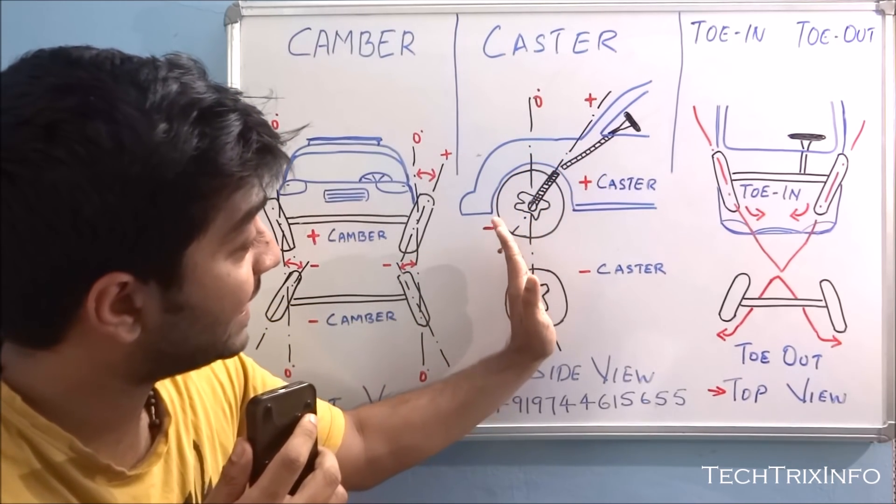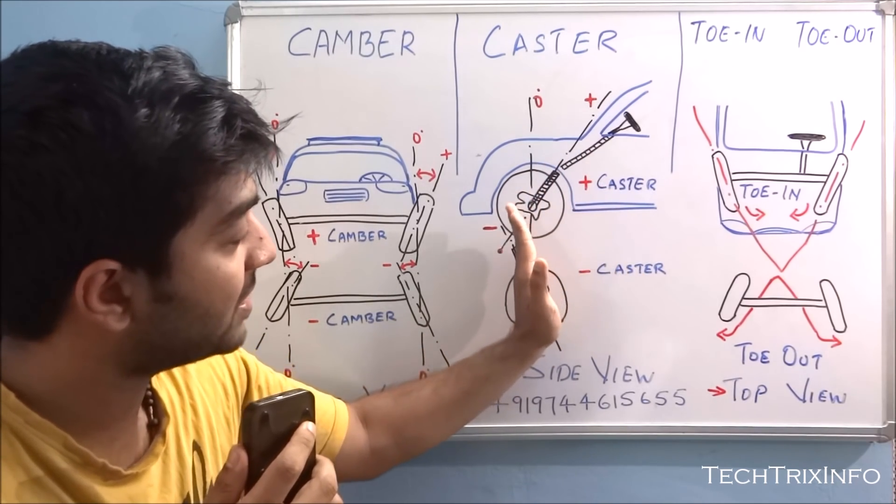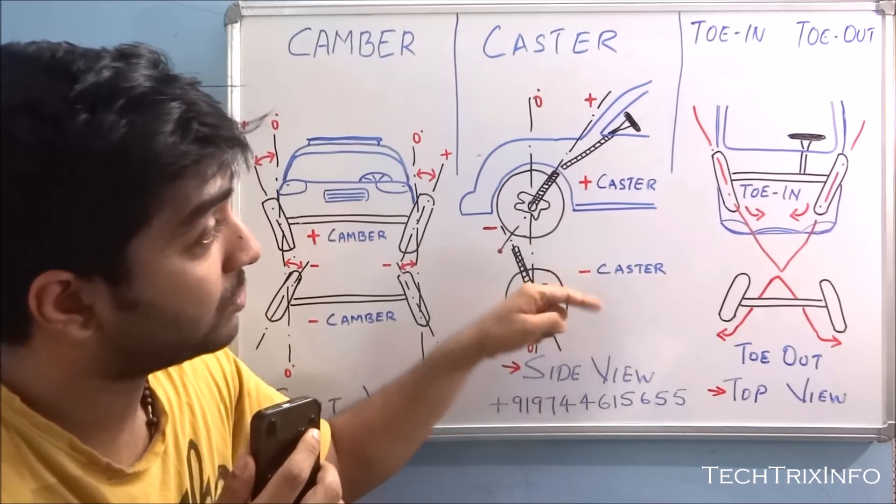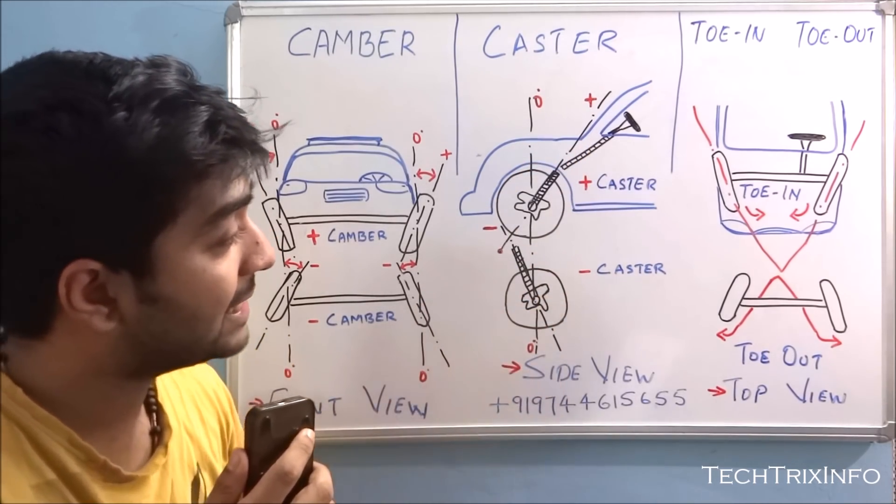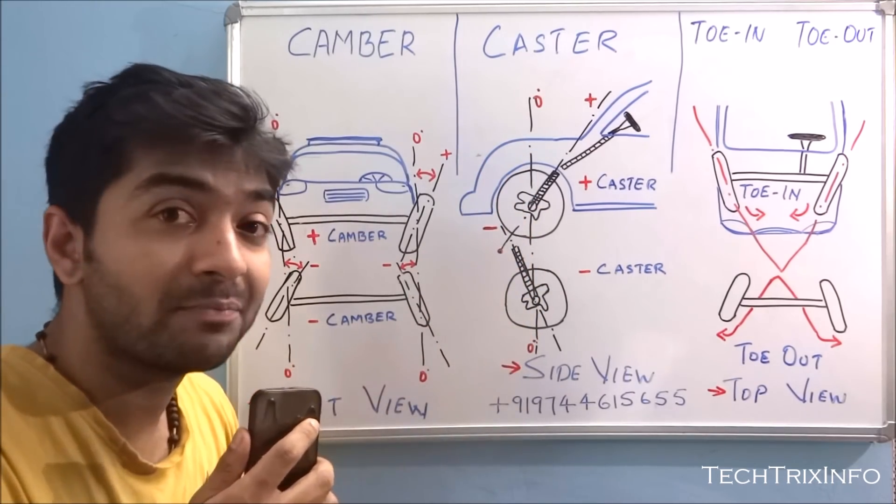And if this steering axis is inclined away from the driver's side, so this is our driver's side and the steering axis inclined away from the driver's side, it's a negative caster. So this is a positive caster and this is a negative caster, depending on the steering axis and the vertical axis of the car.